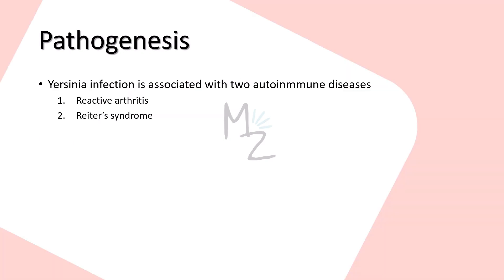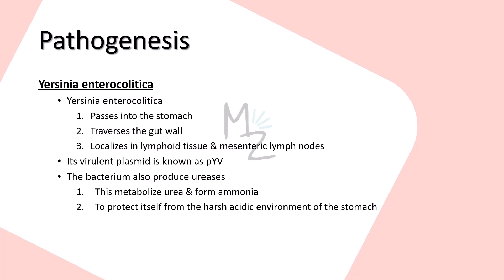Pathogenesis: Yersinia infection is associated with two autoimmune diseases — reactive arthritis and Reiter's syndrome. For Yersinia enterocolitica: as its name suggests, it is related to the gastrointestinal tract ('entero' referring to intestines). It passes into the stomach, crosses the gut wall, and localizes in lymphoid tissue and mesenteric lymph nodes. It carries a virulent plasmid known as pYV, which is involved in pathogenicity. The bacterium also produces urease enzymes which metabolize urea and form ammonia to protect it from the harsh acidic environment of the stomach.